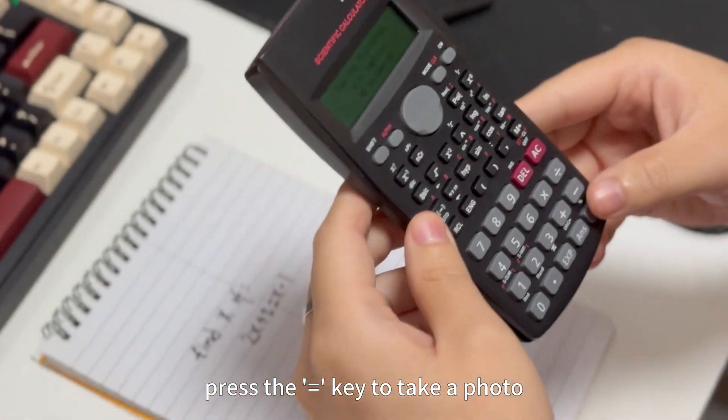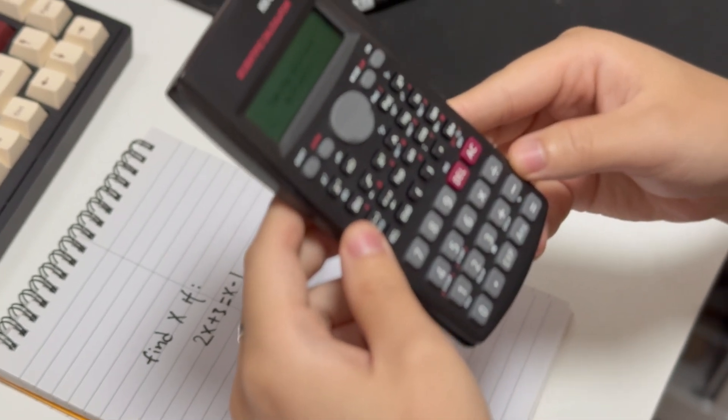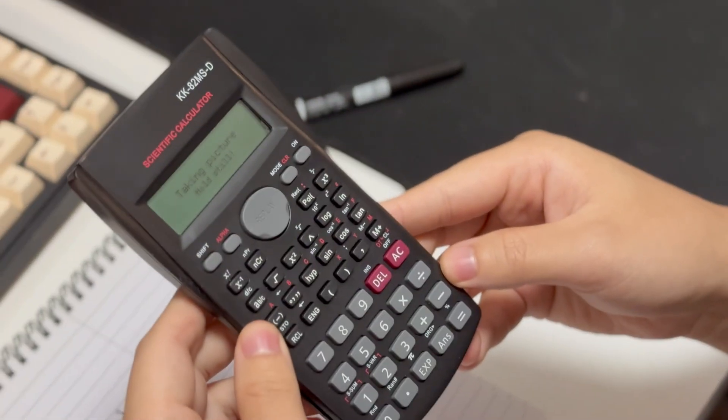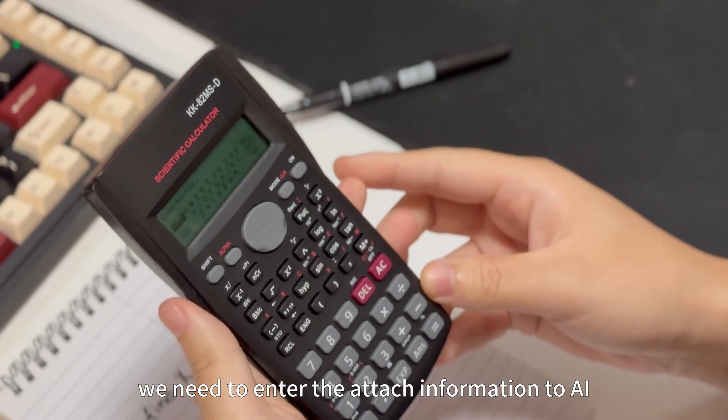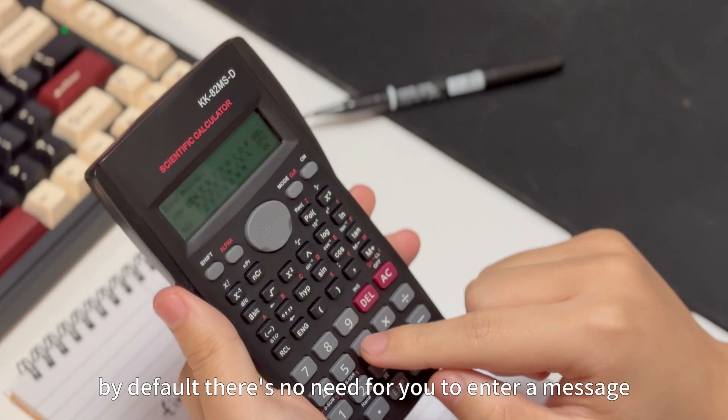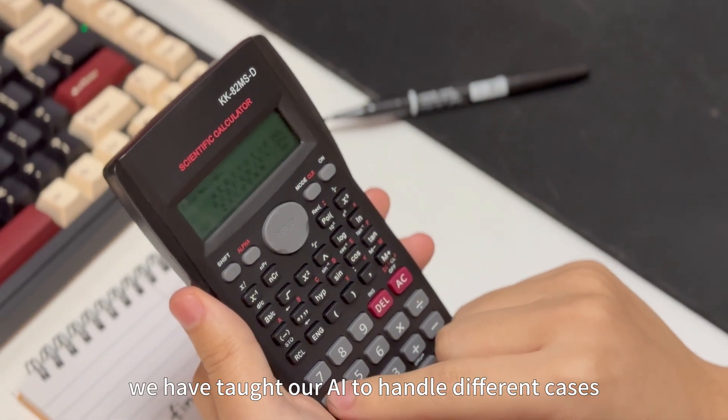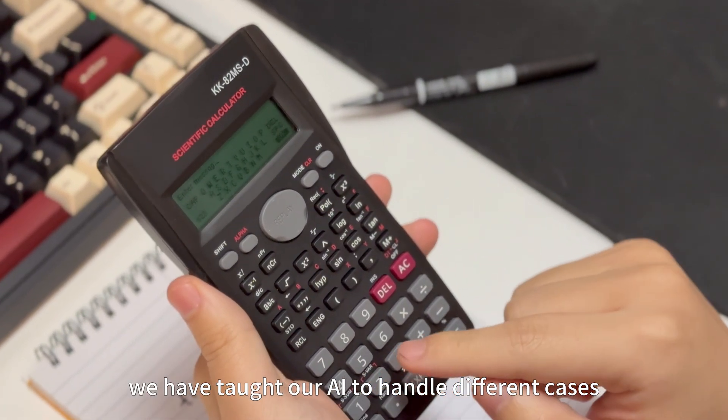Press the equal key to take a photo. We need to enter the attached information to AI. By default, there's no need for you to enter a message for camera mode. We have taught our AI to handle different cases. Please wait a moment.